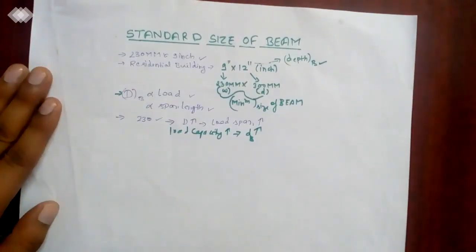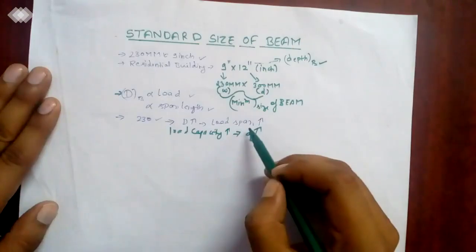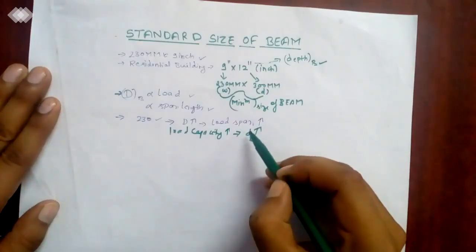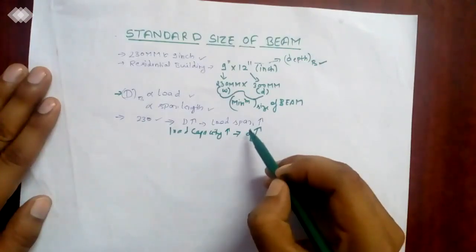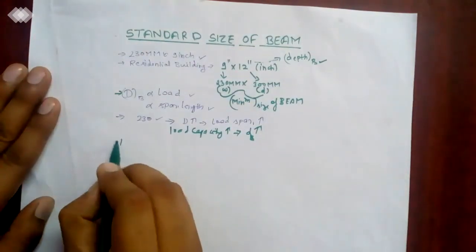That's why I am saying the depth of the beam depends upon the load and the loading conditions. To increase the load carrying capacity of the beam, usually depth of the beam will be increased. When load carrying capacity of the beam is not still increased, the width of the beam will be increased.